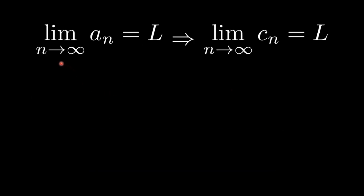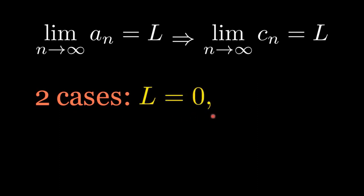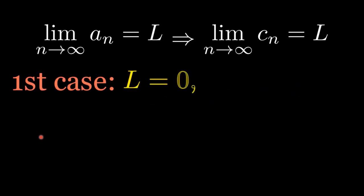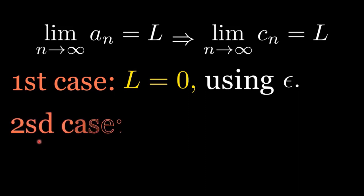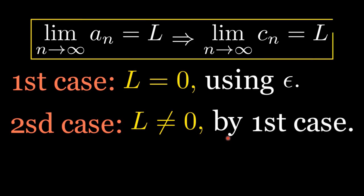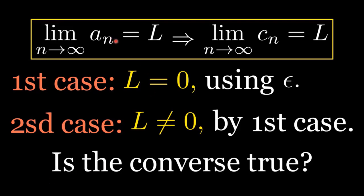Before doing the proof, I give the strategy of the proof. We have two cases: L equals zero, or L different from zero. The first case, L equals zero, is handled using the epsilon definition. The second case, L not equal to zero, is reduced to the first case. After doing the proof, the question is: is the converse of this statement true? We will show that the converse is not true — if C sub n converges to L, we don't necessarily have A sub n converging to L.